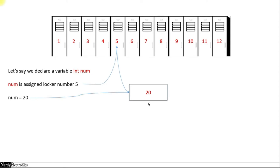Now here is where pointers come in. When we say num, we mean locker number 5 and the value there is 20. So a pointer can be used to store this address of num. The address of num here is 5 while the value is 20, and locker number 5 is where the value 20 is stored.